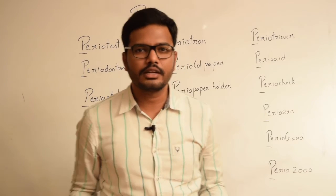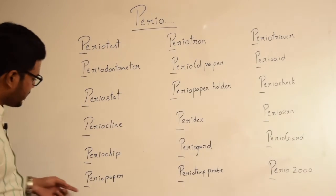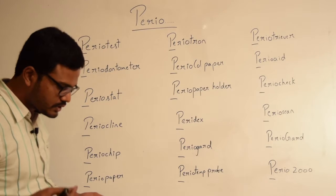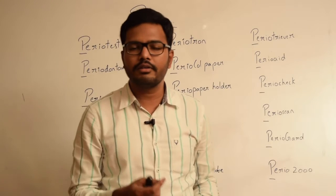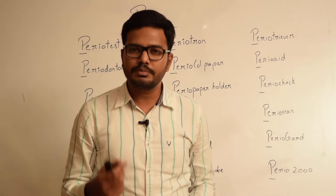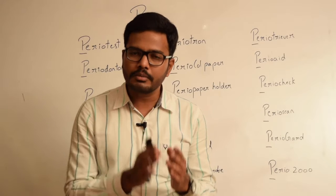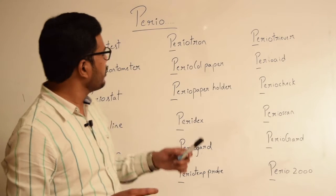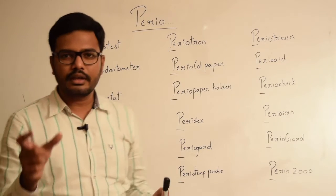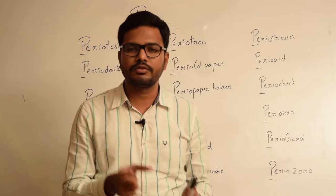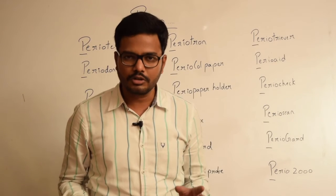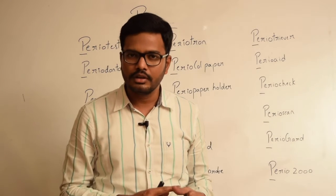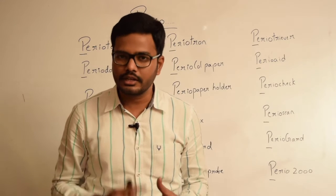Now moving on to the next term, periopaper. Periopaper is a blotting paper used for measuring GCF — gingival crevicular fluid — electronically. These papers have the ability to carry a minimum of 0 to 1.2 microlitres of fluid. Periotron is an electronic instrument also used for measuring GCF, and not just GCF but also pocket fluid, salivary flow, and the thickness of saliva.